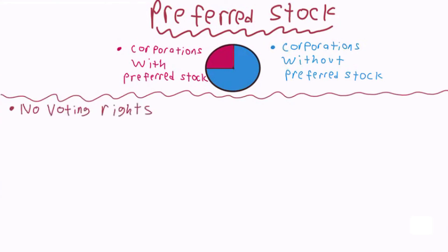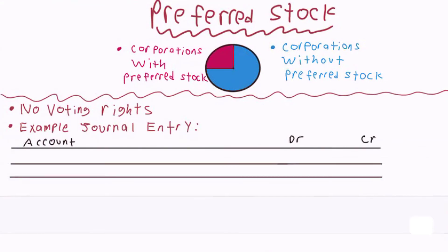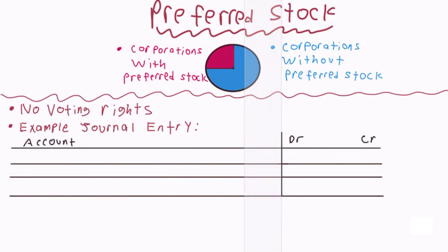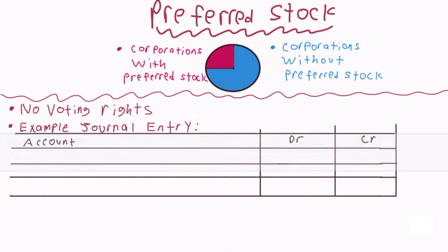Preferred shares typically have a par value, just like common shares, which usually serves as the minimum amount that the shares can be sold at. The journal entry for the issuance of preferred shares is similar to common shares. Consider watching the video on issuing common shares for more detail on the journal entries for issuing stock.